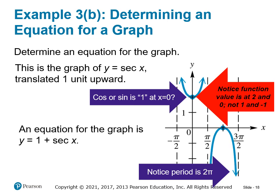That's the end of graphing secant and cosecant. As long as you're comfortable doing sine and cosine, you should be able to do these pretty simply as a relative estimation approach to graphing.